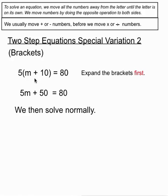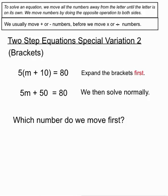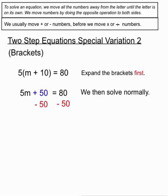So then it's pretty much a solved normally situation. So a good first move of expanding the brackets gets us into our comfort zone again. We ask ourselves what number should we move first. Now remember in two-step equations we want to move plus or minus numbers before we move multiplication numbers. So we'll move the plus 50 first. How do we move the plus 50? By doing the opposite to both sides. So we're going to minus 50 both sides. On the left hand side the plus 50 and the minus 50 will cancel each other out leaving us with the 5m term on its own on the left hand side. And on the right hand side 80 minus 50 is 30.